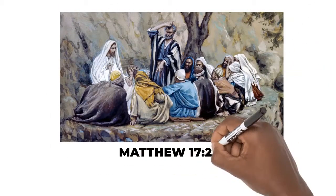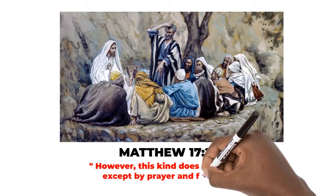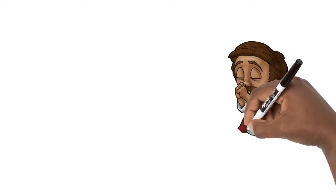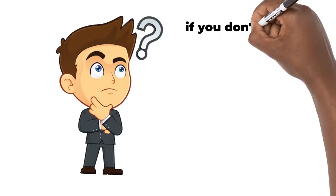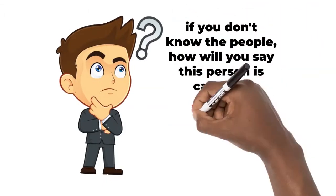That this kind, that's not cast out, I said by prayer and fasting. Choose men that you know. Jesus, after prayer, chose 12 disciples. If you don't know the people, how will you say this person is capable?